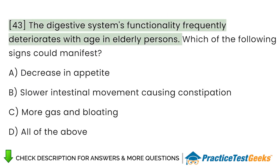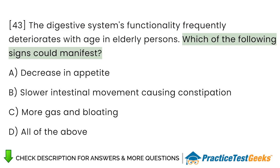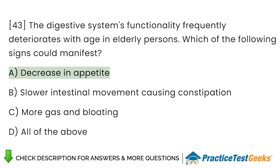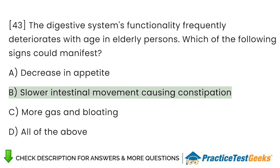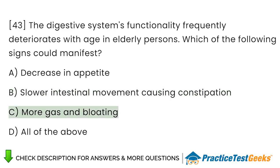The digestive system's functionality frequently deteriorates with age in elderly persons. Which of the following signs could manifest? A. Decrease in appetite. B. Slower intestinal movement causing constipation. C. More gas and bloating. D. All of the above.